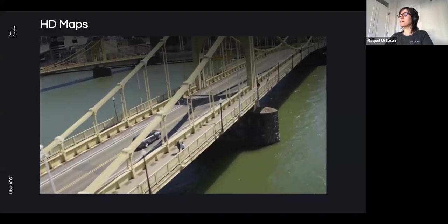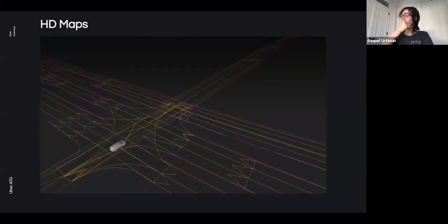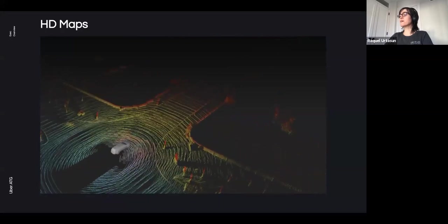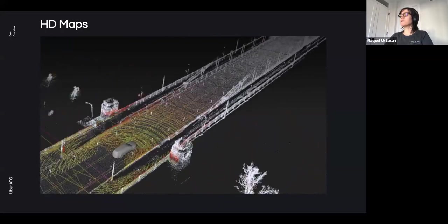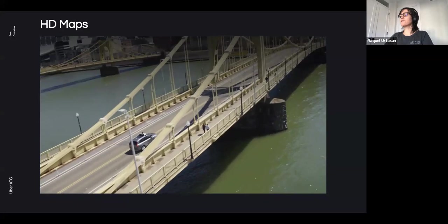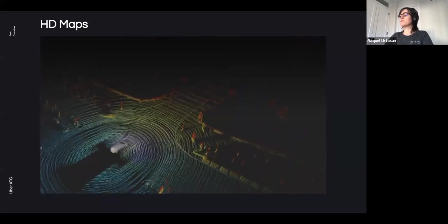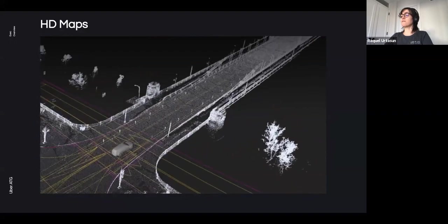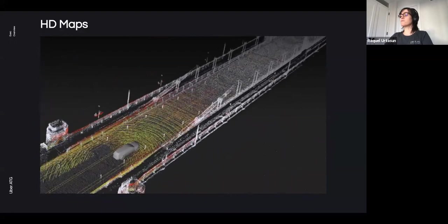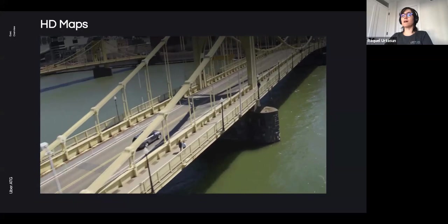The second type of maps used in self-driving vehicles are high-definition maps, which contain both detailed geometry and semantic information about the environment. These are used for precise localization of the self-driving vehicle and also as prior knowledge for the autonomous system and for simulation.